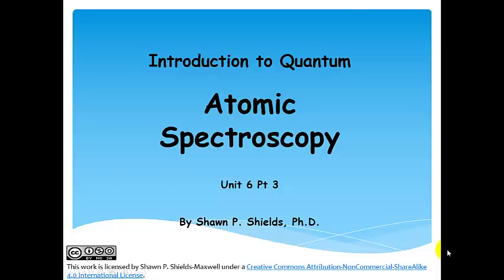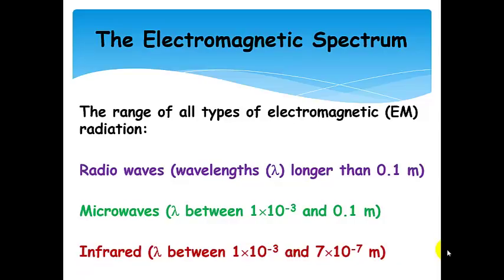Atomic spectroscopy. Before we talk about atomic spectroscopy, let's discuss electromagnetic radiation in general. It's categorized into various wavelength ranges. Radio waves are the very longest wavelengths, longer than 0.1 meters.